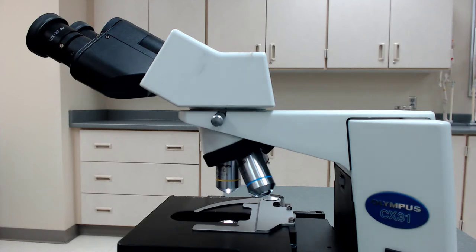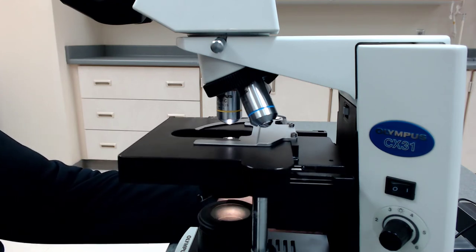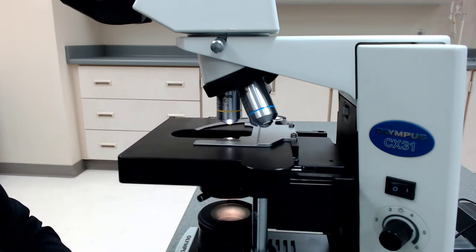Now, so it's called a binocular parfocal compound light microscope. So I think the light part is easy enough to understand. The energy source here is a beam of visible light. So it's just a normal little light bulb in there.